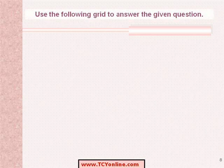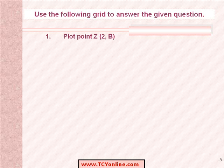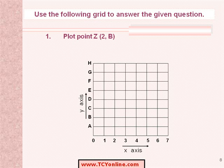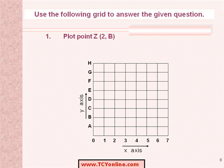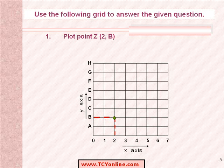We would practice a similar question for better understanding. We are going to plot a point Z at coordinates (2, b) on the grid shown. We know that 2 represents the position of point Z along the x-axis and b represents the position of point Z along the y-axis. Therefore, on drawing two lines from 2 and b along the x-axis and y-axis, we find that they meet at the point shown by the green dot. Therefore, this point is point Z.